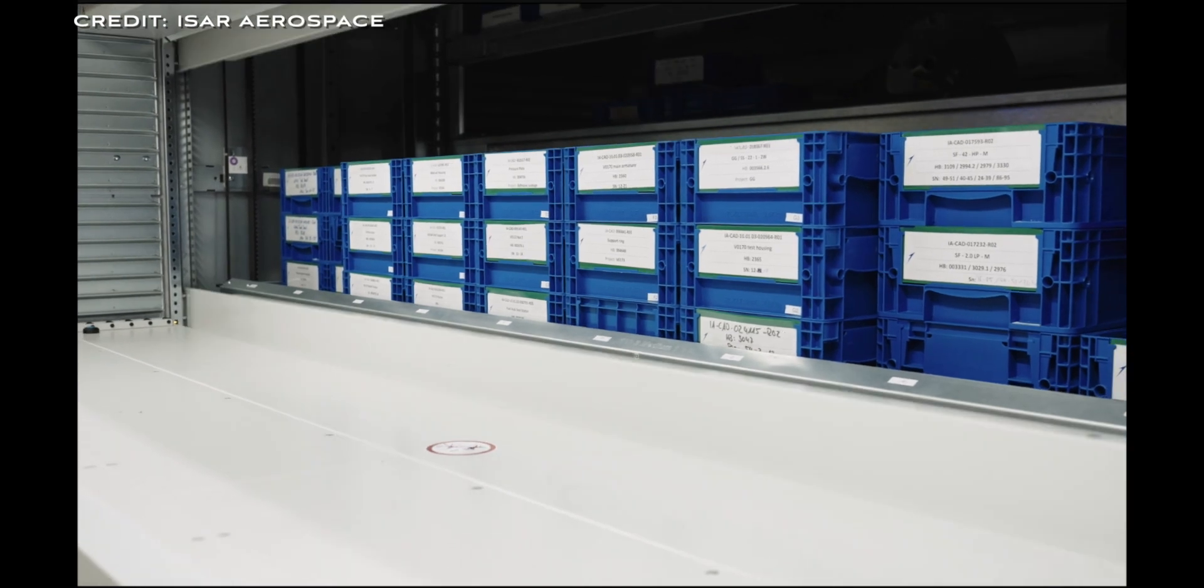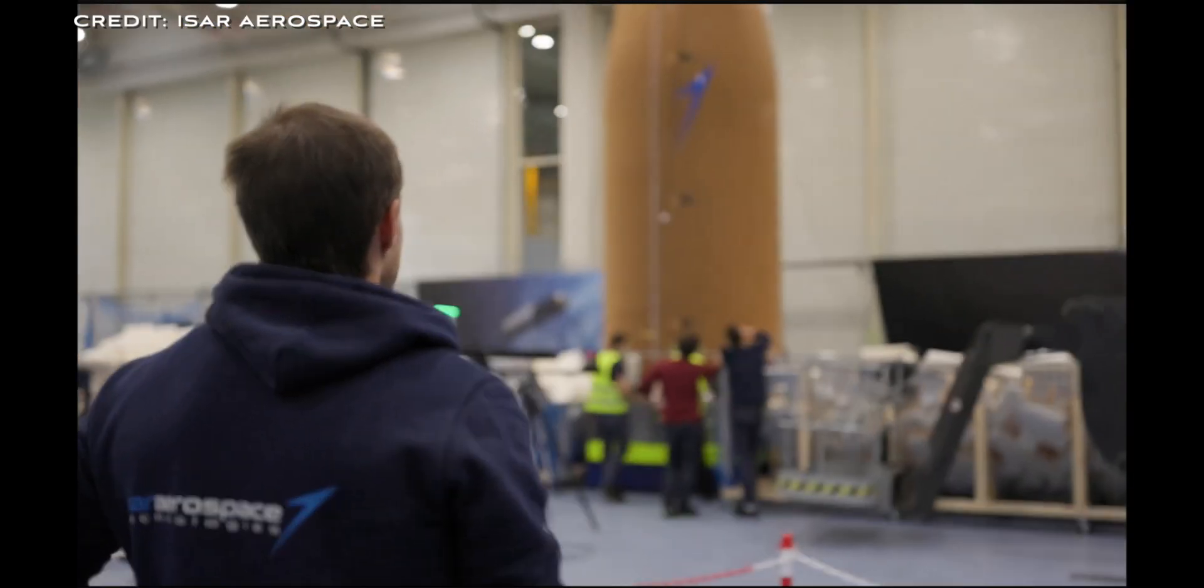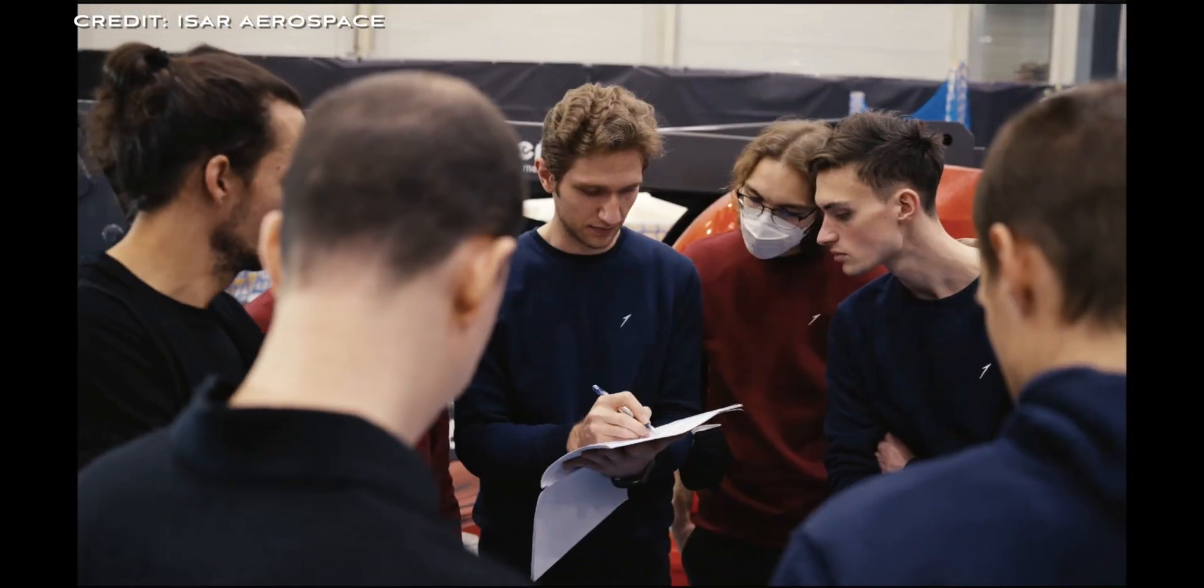The payloads are from Germany, Norway and Slovenia. A total of seven small satellites will be launched with a total weight of about 100 kilos, that's about 220 pounds. They will be deployed into a polar orbit from the Norwegian spaceport of Andøya.